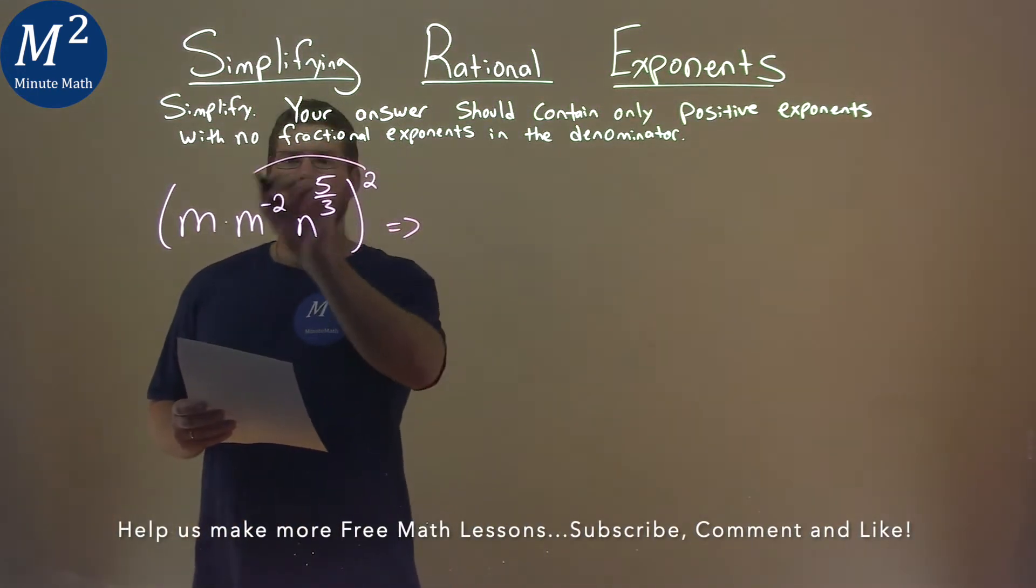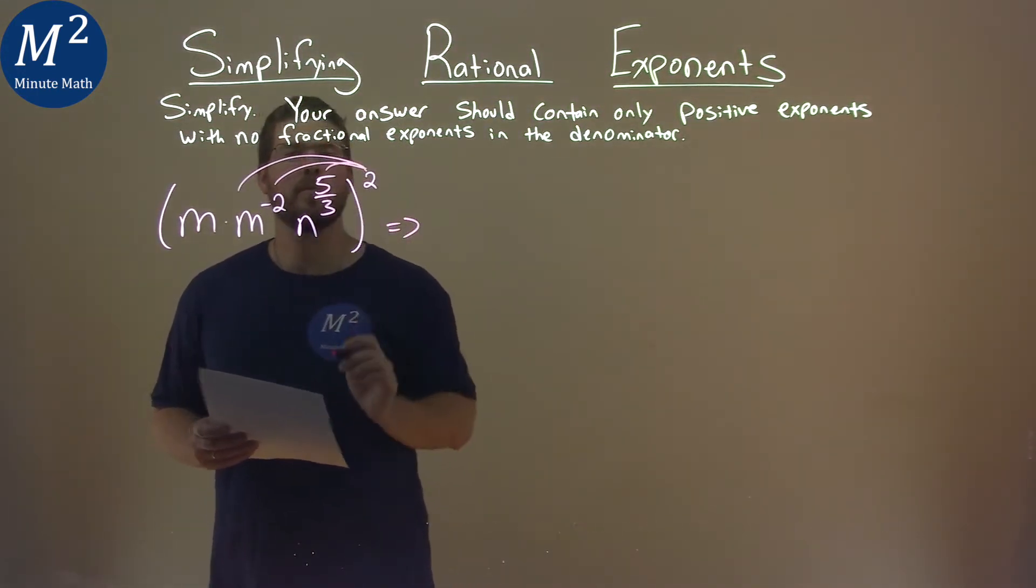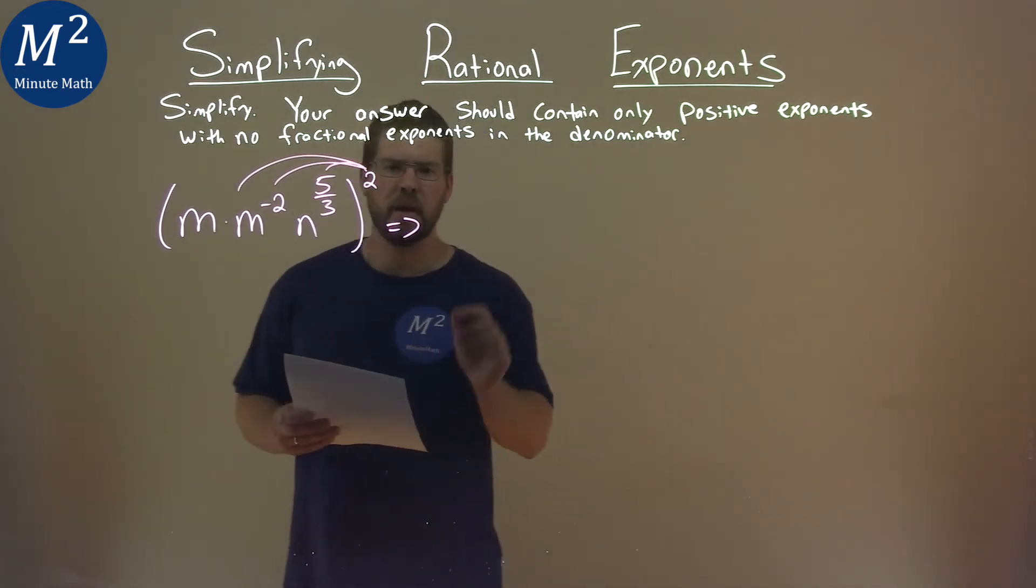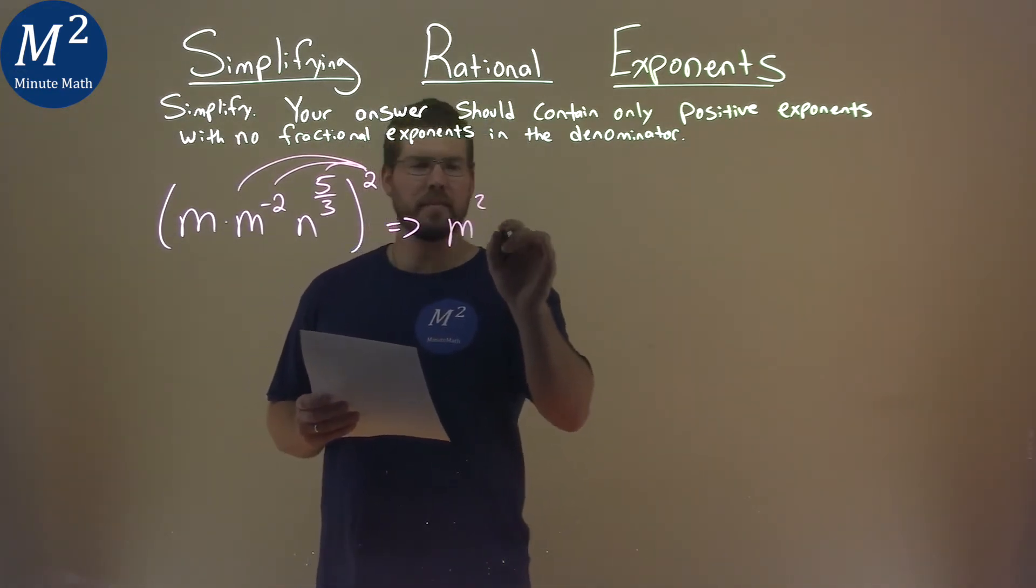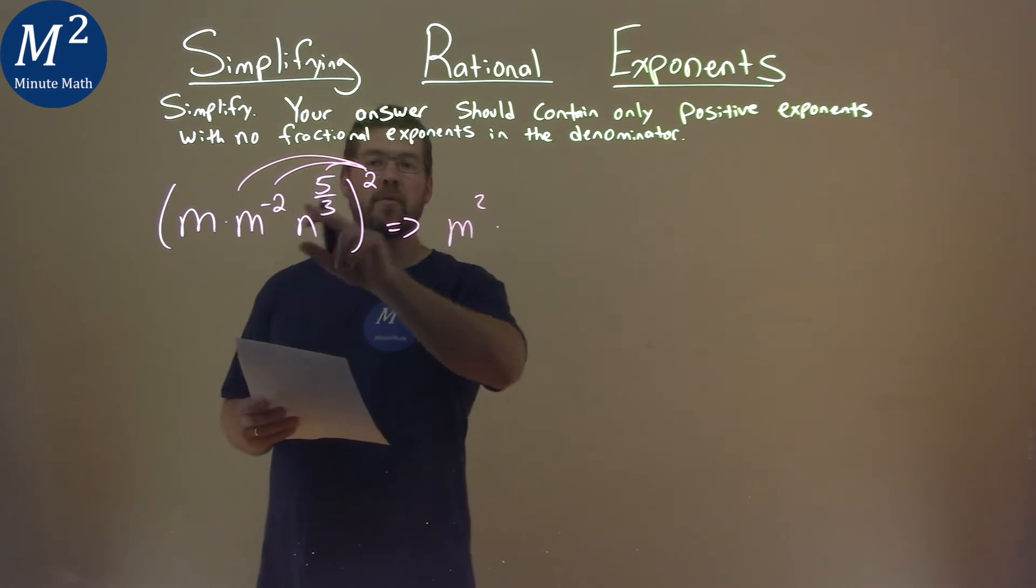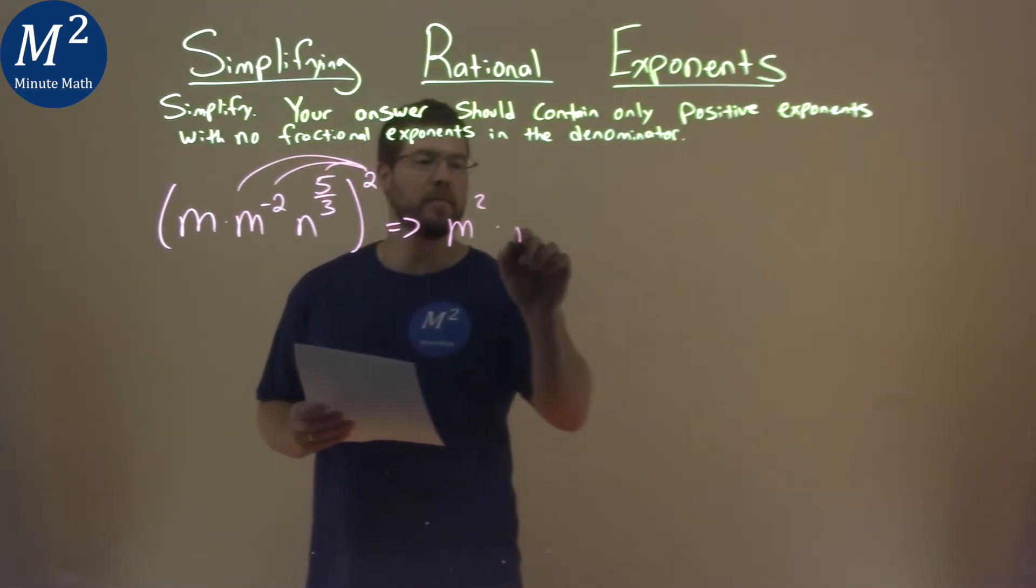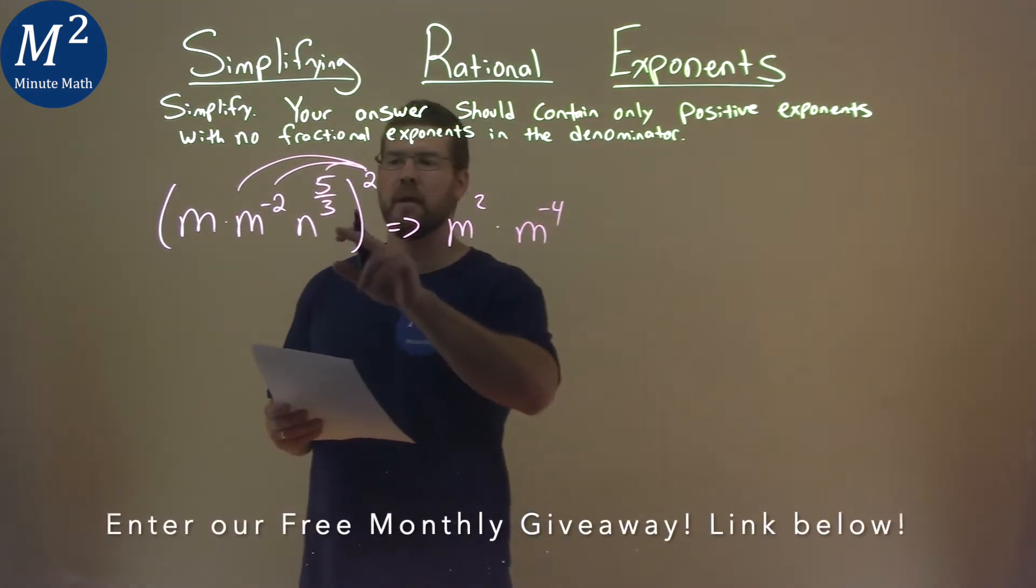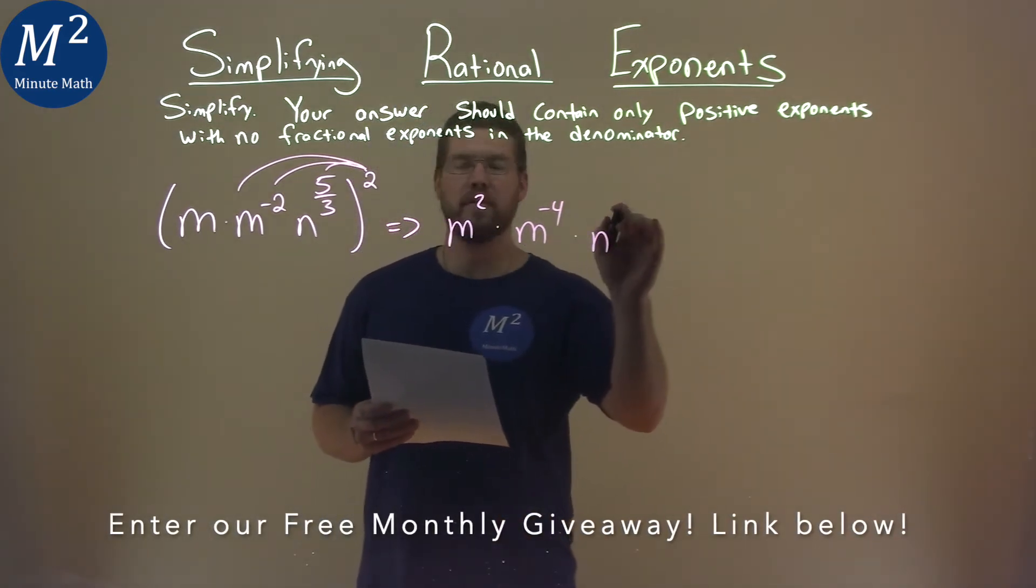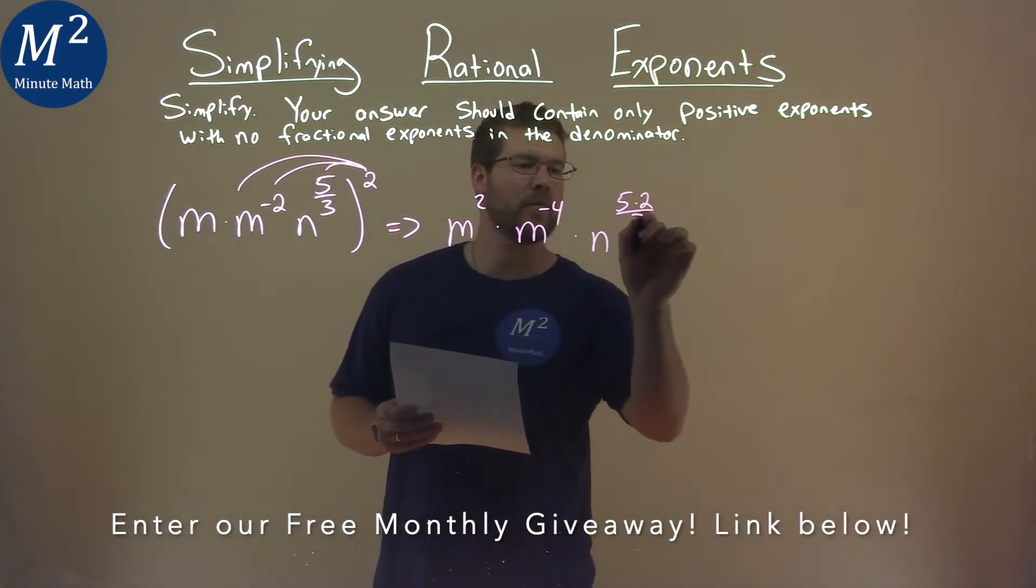First thing is I'm going to apply this squared to each part being multiplied inside of the parenthesis. So that's going to be m squared times, well remember we multiply our exponents here, so negative two times two is negative four. And the same thing here, multiply n to the five times two over three.